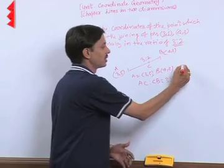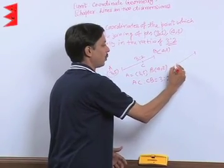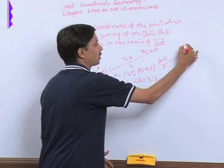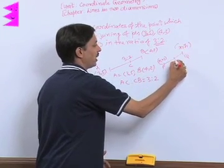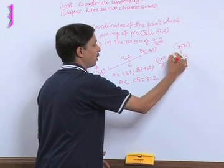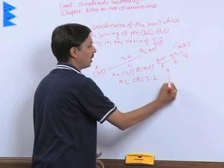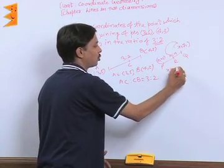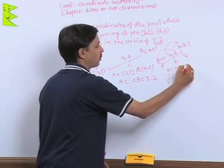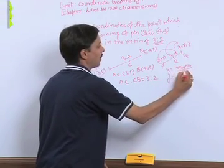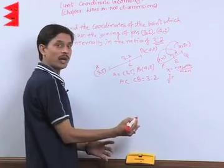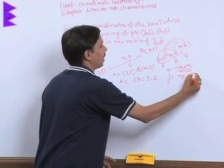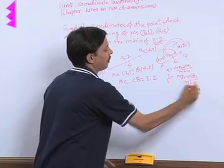Let me tell you how we use the section formula. Suppose this is point P, this is Q with coordinates (X₁, Y₁) and (X₂, Y₂). Point R divides joining of this in M is to N. Then values of X and Y at R are given by MX₂ + NX₁ upon M + N, and value of Y is given by MY₂ + NY₁ upon M + N.